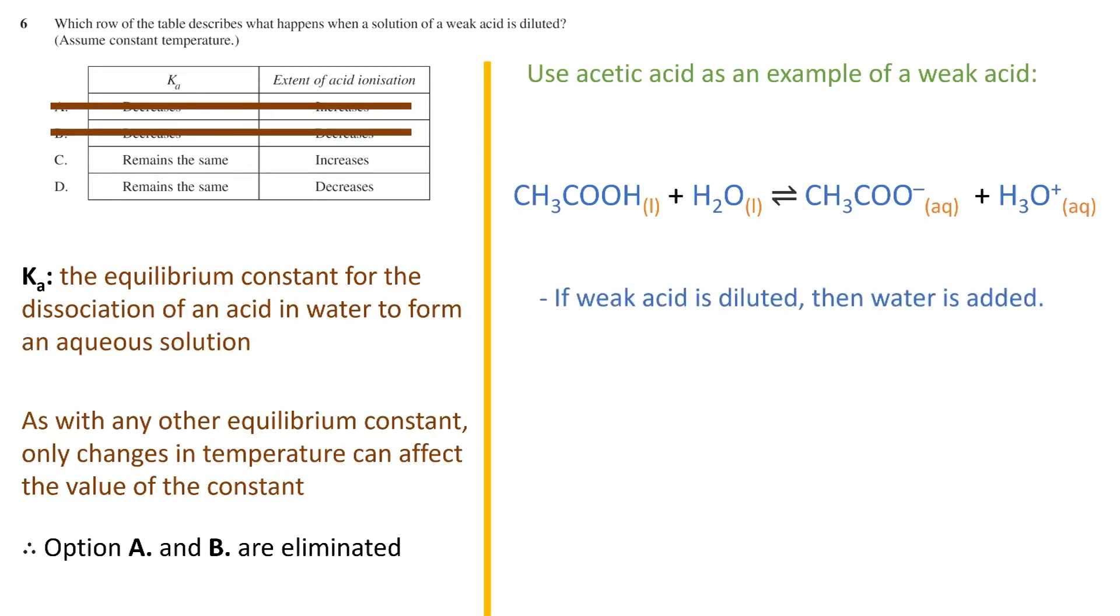Assuming our solution of acetic acid was at equilibrium previously, effectively what we are doing when diluting is adding more water. This increases the concentration of the water in the equation. The system will shift its equilibrium point in order to counteract or resist that change, as per Le Chatelier's principle, meaning it will favor the side that uses up the water. This means the forward reaction is favored, and the equilibrium point shifts to the right.